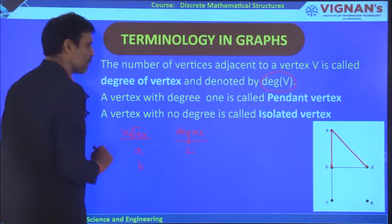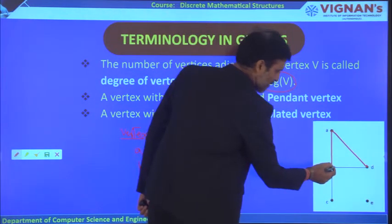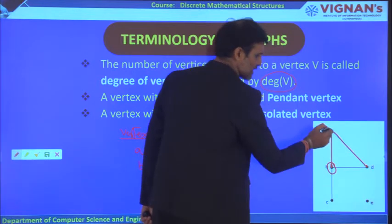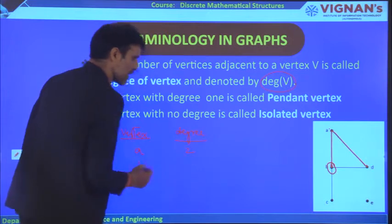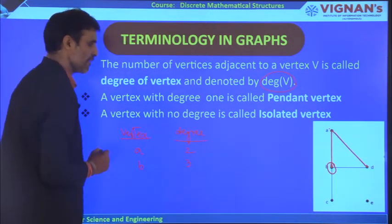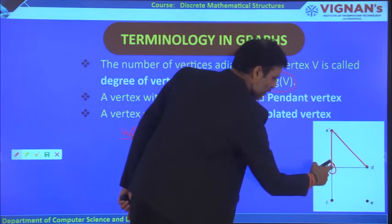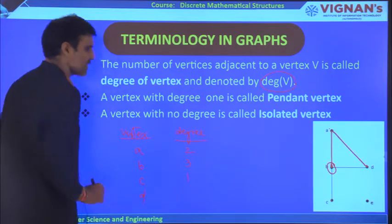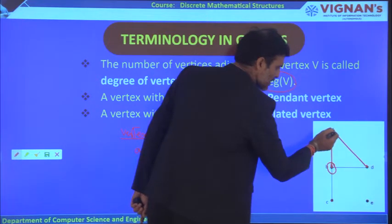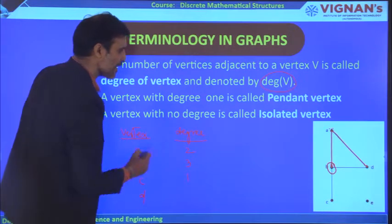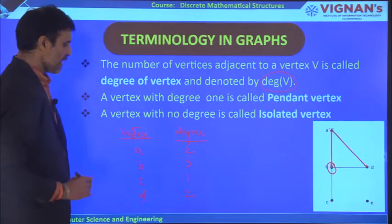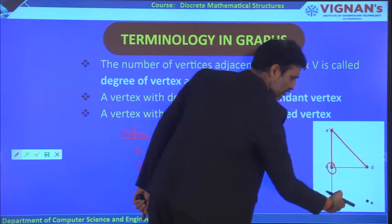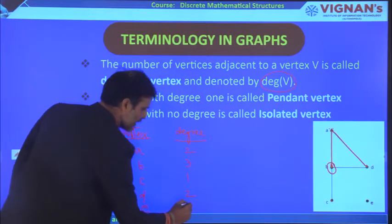For vertex C, it has only one adjacent vertex B, so the degree of C is 1. For vertex D, the adjacent vertices are A and B, so the degree of D is 2. For vertex E, it does not share any edge with any other vertex, so it has no adjacent vertices — therefore, the degree of E is 0.